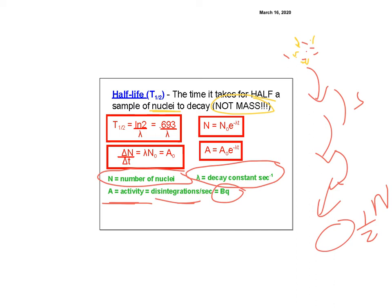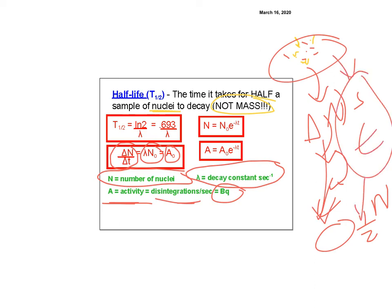Activity equals lambda times N-naught — the original sample size — and represents the change in nuclei per unit time. The number of nuclei at any given time is N equals N-naught times e to the negative lambda t. Similarly, activity at any time equals A-naught times e to the negative lambda t. These are the same exponential decay equation. If you know the current activity, you can solve for t to find how much time has elapsed.